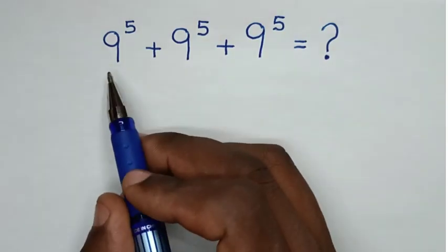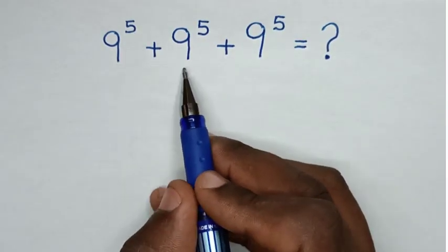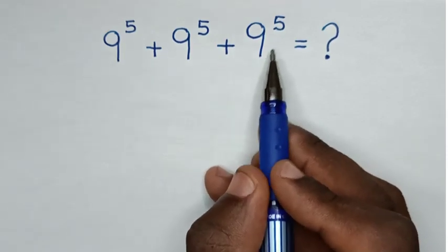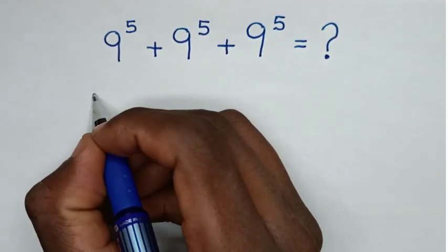Hello. 9 to the power of 5 plus 9 to the power of 5 plus 9 to the power of 5, so it will be equal to